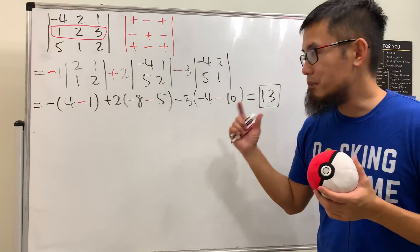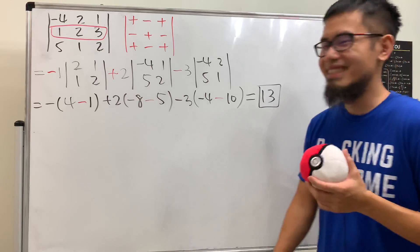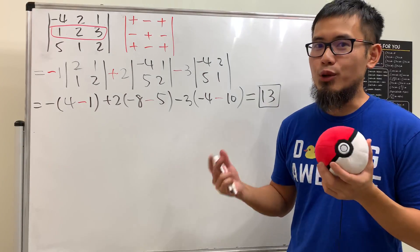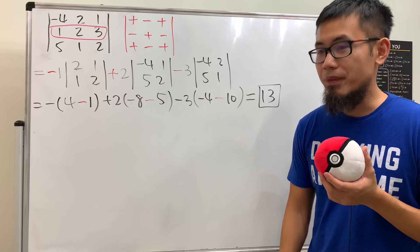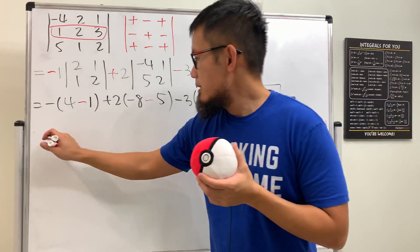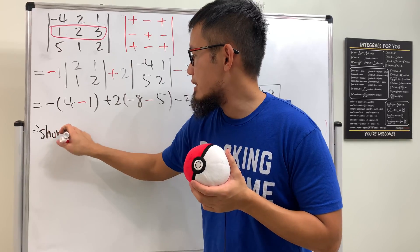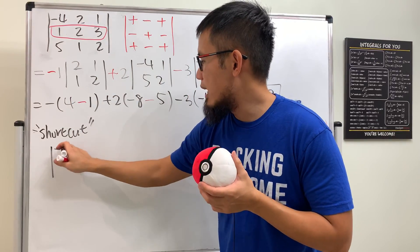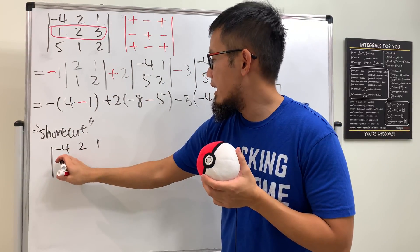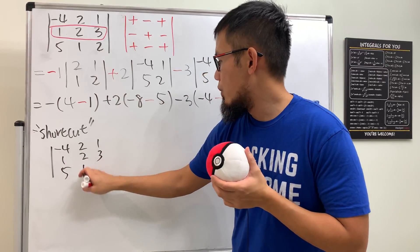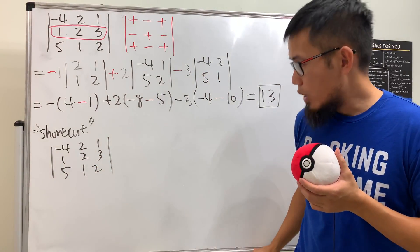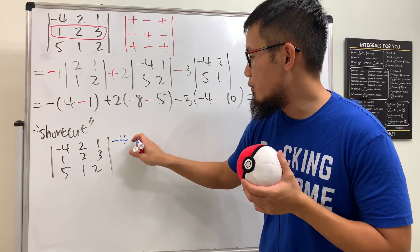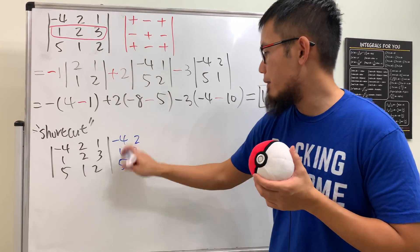I calculated this beforehand, that's how I know the answer is positive 13. Anyway, many of you know there's a trick — the so-called shortcut for a three by three matrix determinant. Let me show you that. What you do is write down the matrix and then copy down the first two columns again on the side.